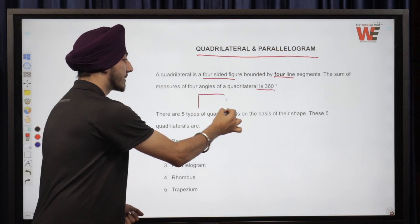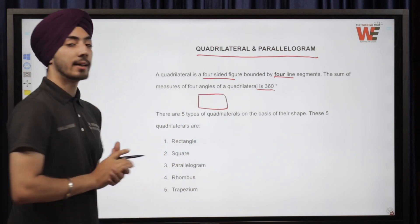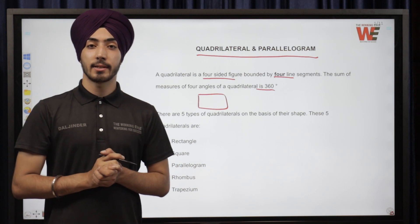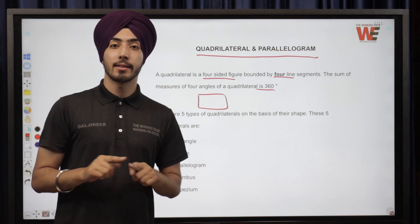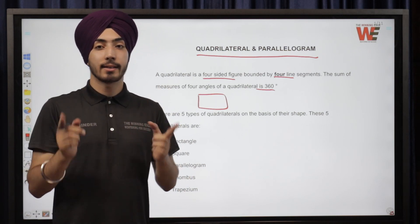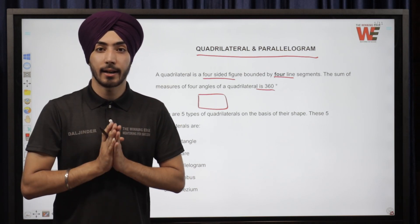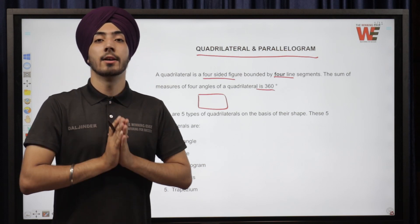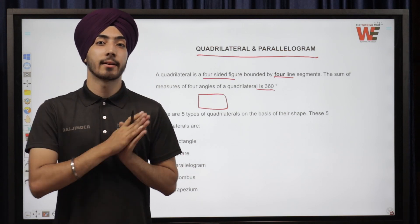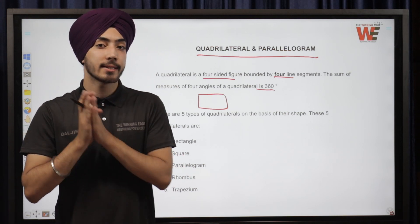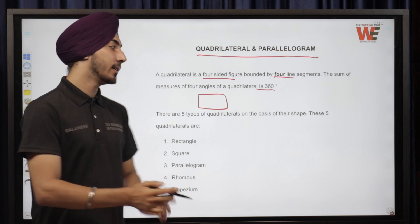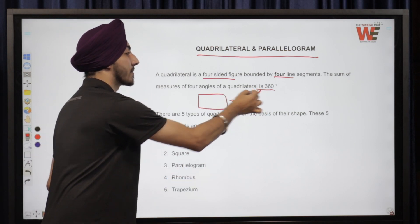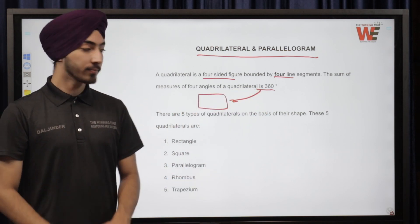For example, let's say we have a rectangle. A rectangle has four angles, and all the angles in a rectangle are 90 degrees — 90, 90, 90, and 90. When we add them up, we get 360 degrees.